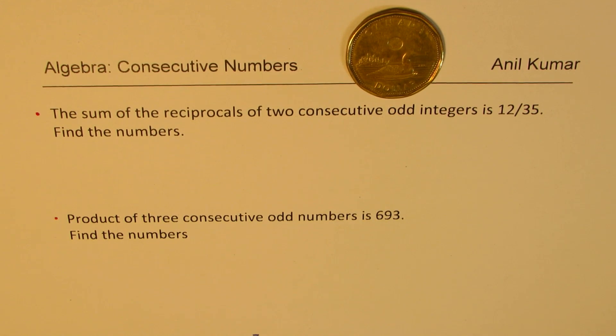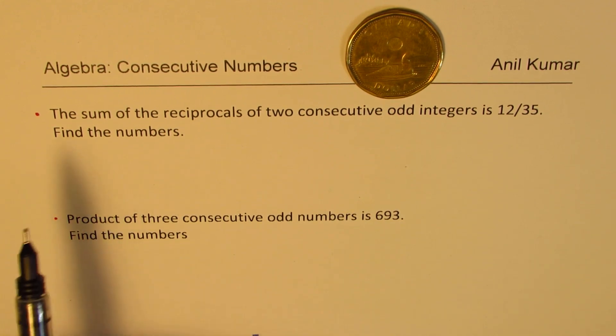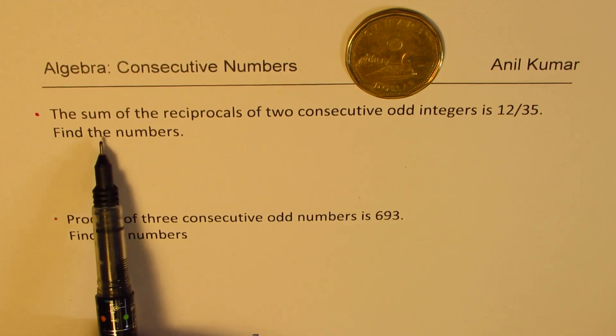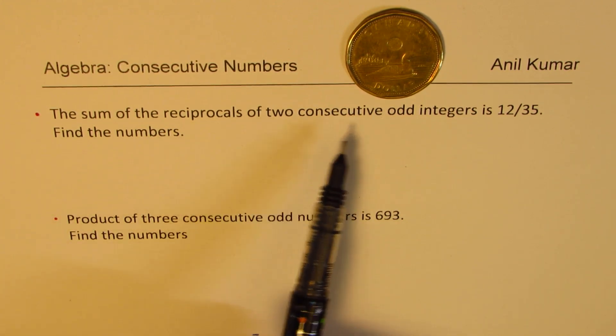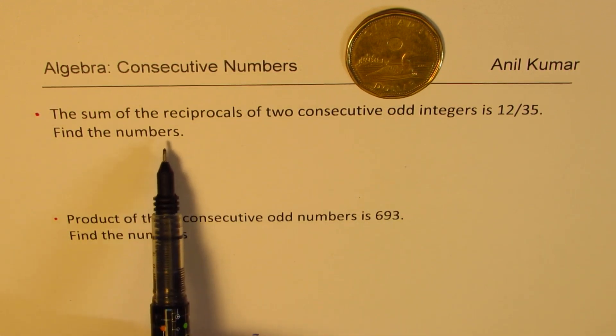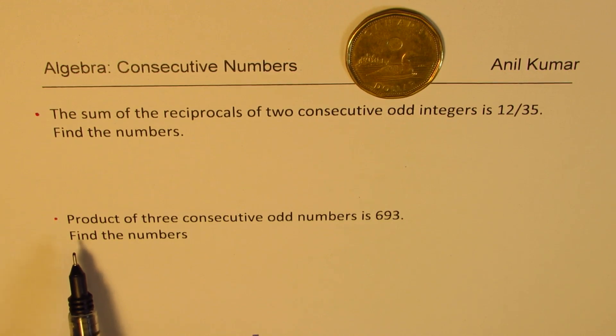Now both these questions are related with consecutive numbers and we'll specifically talk about odd consecutive numbers. So let's look into these questions. The very first one is the sum of the reciprocals of two consecutive odd integers is 12 over 35. Find the numbers. The second one is product of three consecutive odd numbers is 693. Find the numbers.